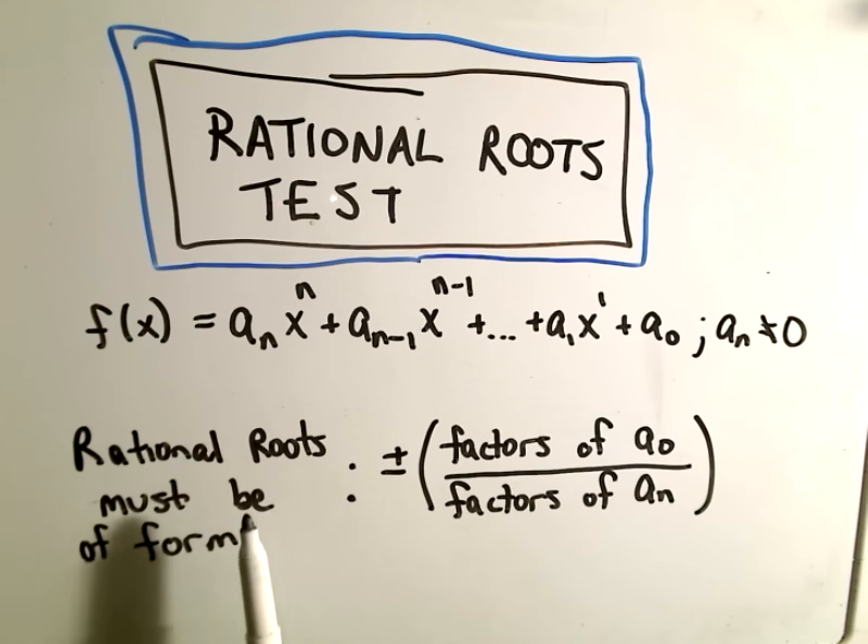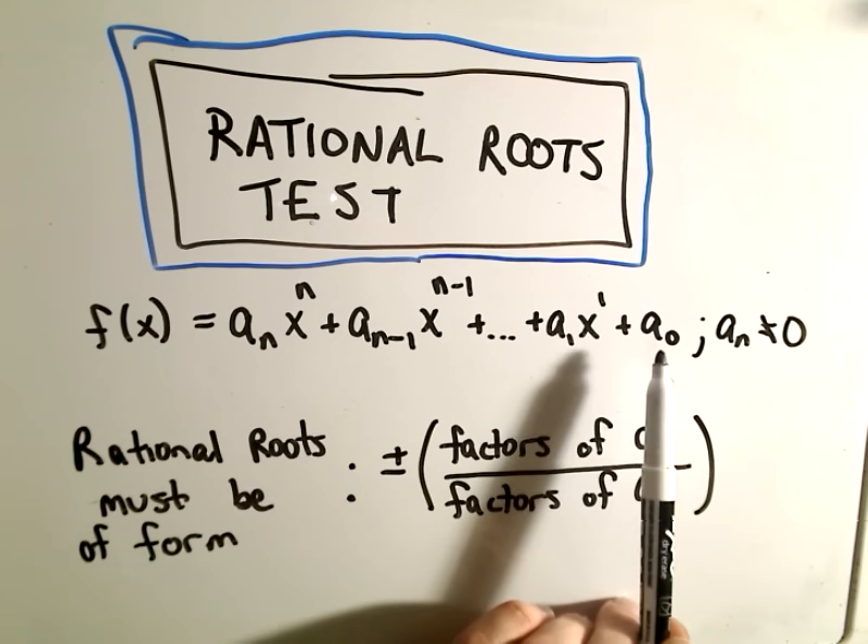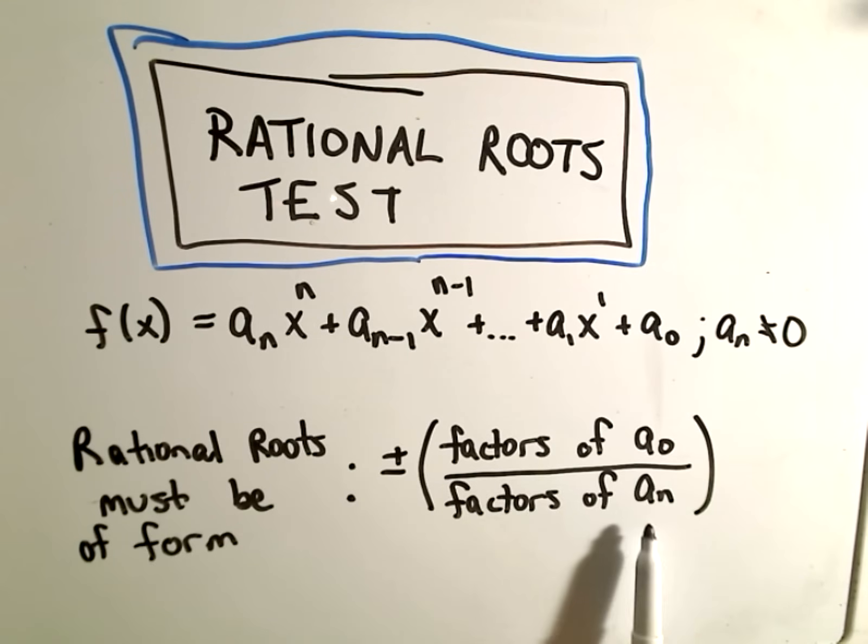It says if there are rational roots (polynomials can have roots that aren't rational), but if there are rational roots, to get them you basically look at factors of the constant, you look at factors of the leading coefficient, you look at all possibilities, and then plus or minus that.